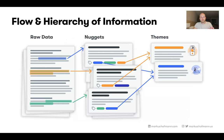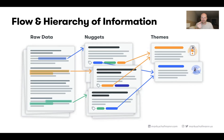Here's the same process from a different angle — I call it the flow and hierarchy of information. You have raw data, which is the most verbose and the largest amount of data. You highlight certain parts and turn them into so-called nuggets — each little piece of information is like a little gold nugget, which is super valuable. That's where the term comes from. From the raw data you create dozens or even hundreds of tiny little nuggets, then condense them into themes — the common insights you find across all your raw data.